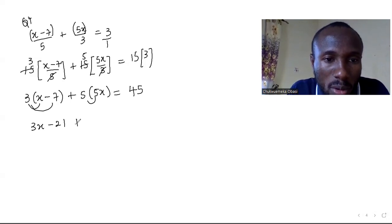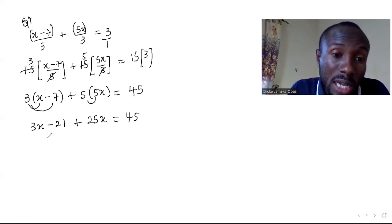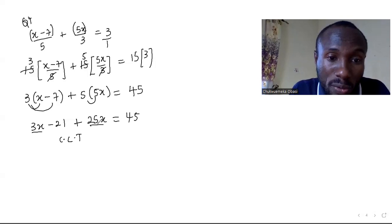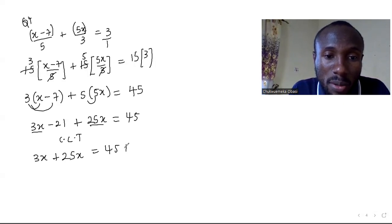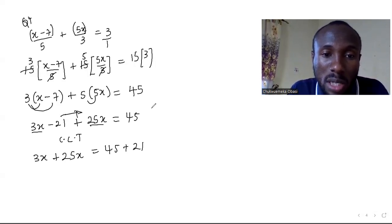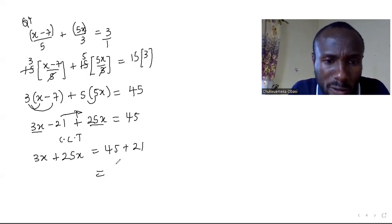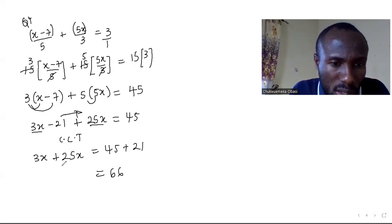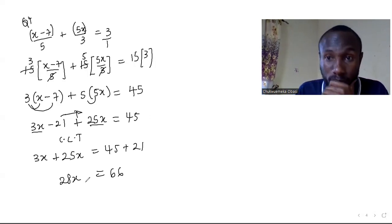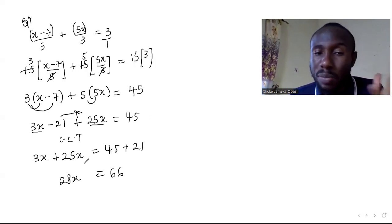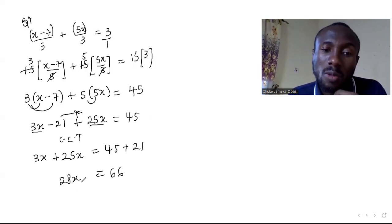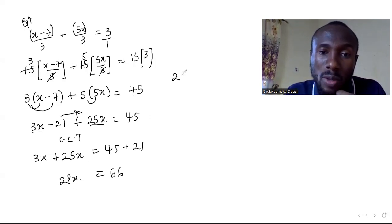Distribute: 3 times (x minus 7) gives 3x minus 21, plus 5 times 5x gives 25x, equal to 45. Collect like terms: 3x plus 25x is 28x. The minus 21 crosses over to become plus 21, so on the right side 45 plus 21 gives 66. So 28x equals 66.